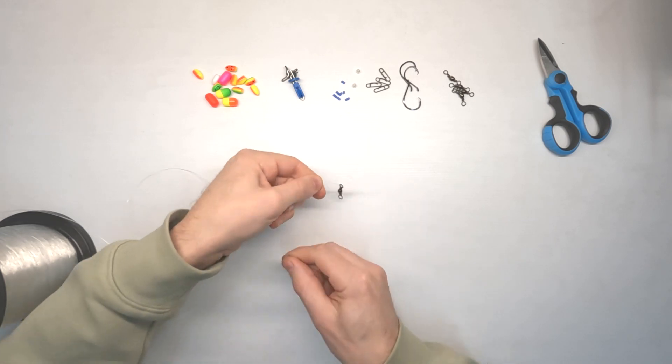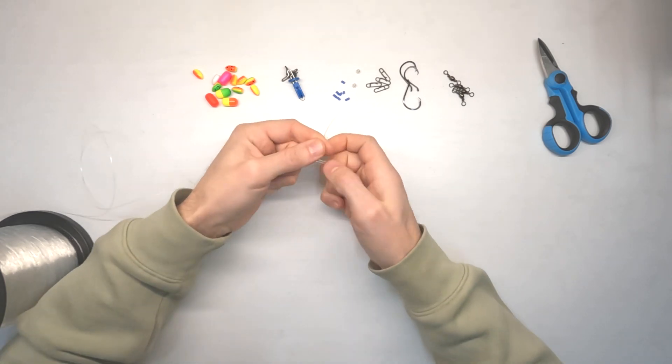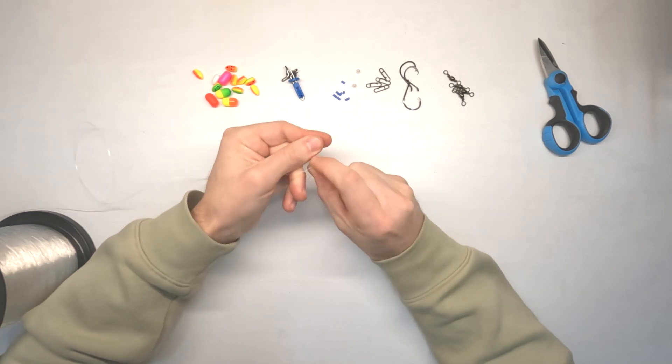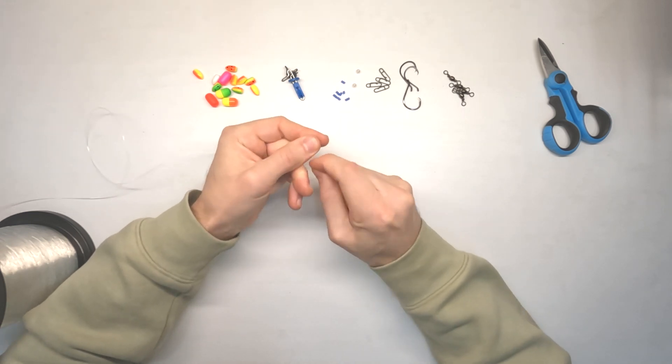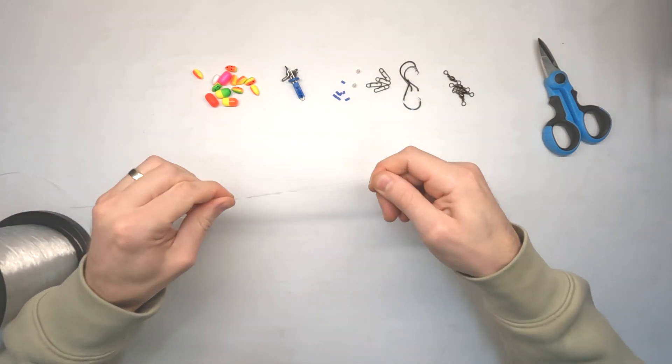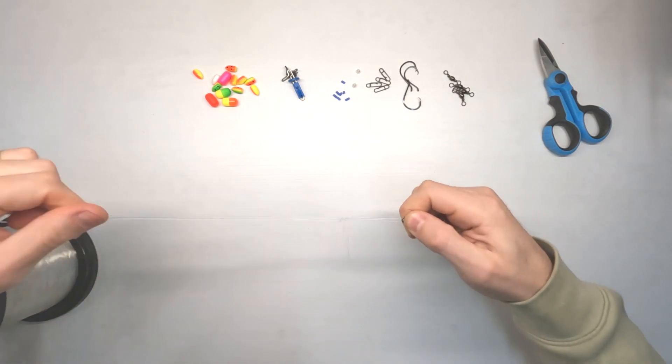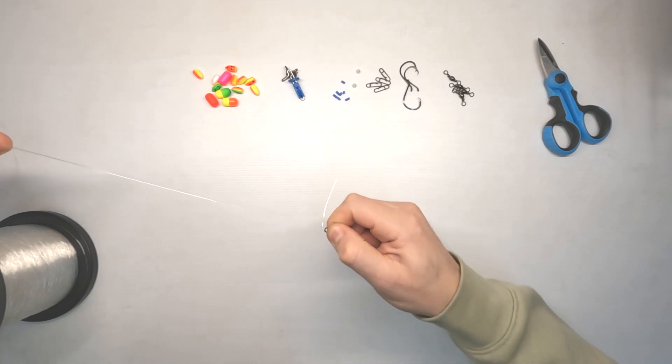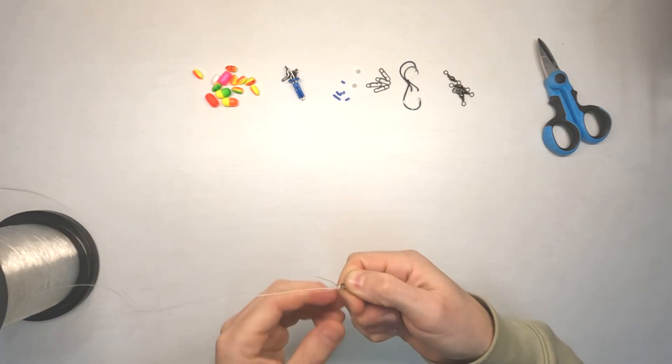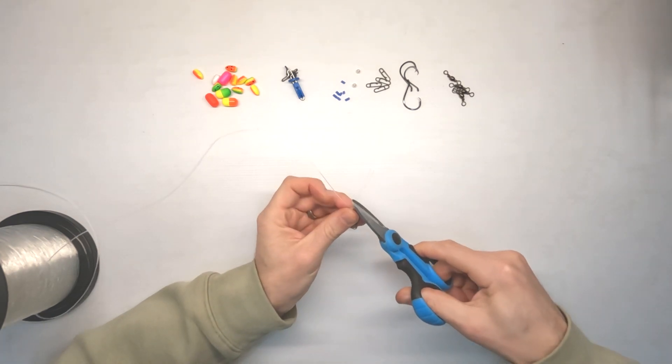Grab both strands together, create a loop, and then go through that loop three or four times. Then usually lubricate that a little bit by putting it in the mouth, just pulling it through my mouth so then the knot draws up nice and tight and easy like so. Trim off your tag end.